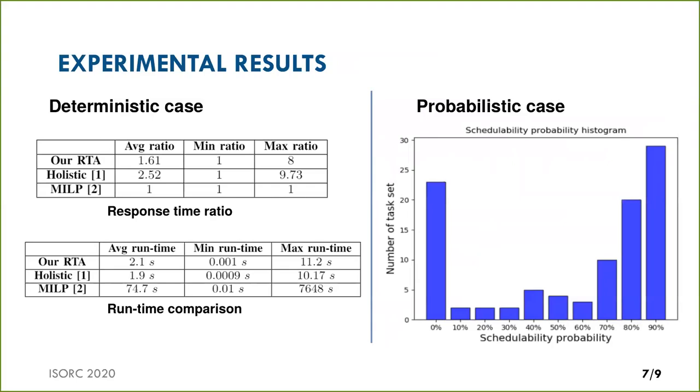We compare our deterministic analysis to the holistic approach of Palencia et al. and the mixed-ILP approach of Fonseca et al. On average, our analysis overestimates the exact response time obtained by MILP by 1.6 times, while the holistic approach overestimates by 2.5 times.